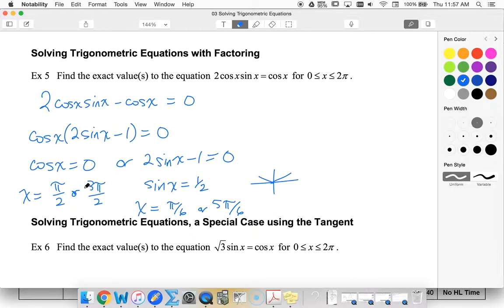So I have four solutions. If you had just divided by cosine, you would have ended up with only these two solutions. So make sure rather than canceling, we always want to factor.